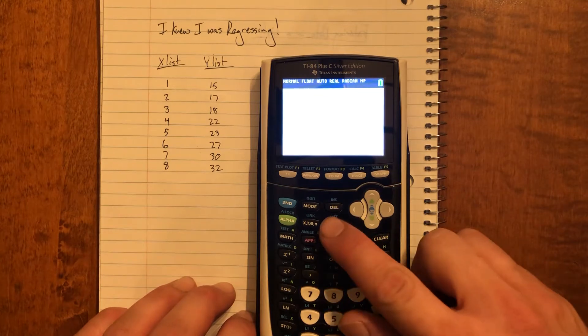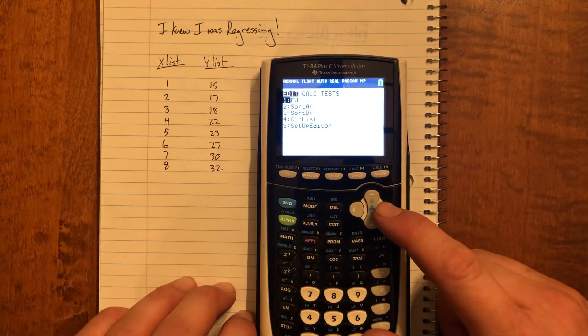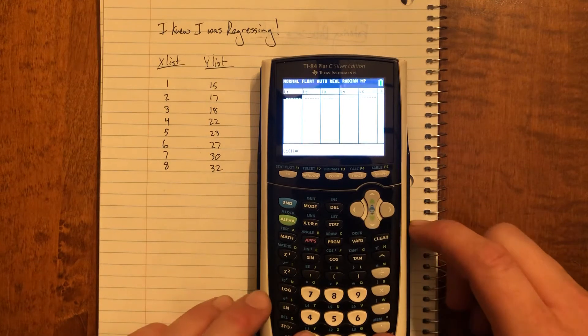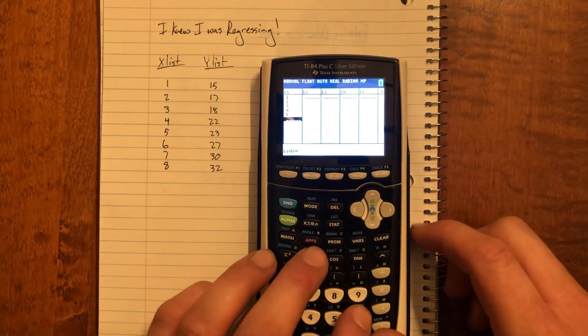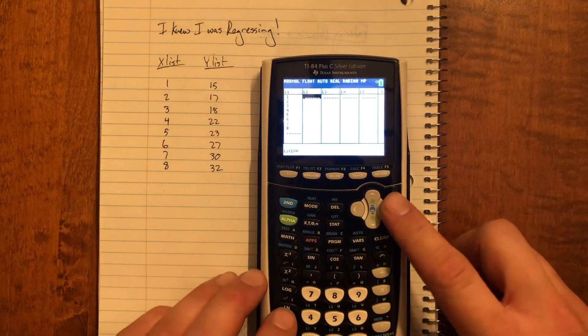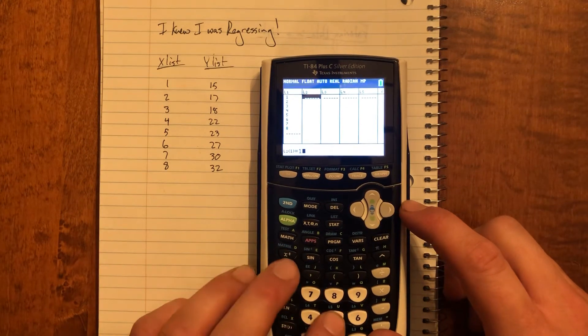What we'll do is we'll enter in these elements into a pair of lists. So in x list I'll enter in L1: one, two, three, four, five, six, seven, eight. And in L2 I'll enter in my other elements.